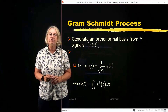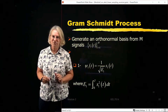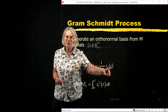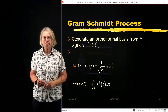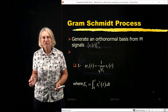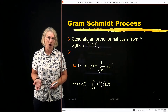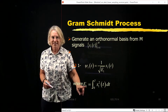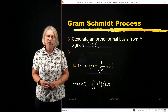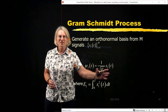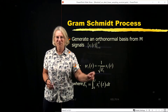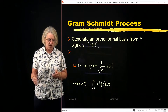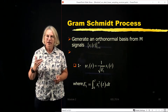Here's step one in our recipe: we first find the first basis vector. The first basis vector is easy — we just pick one of our symbols. Because I want it to be orthonormal, I've got to normalize the energy to one. So I calculate the energy of this first symbol, that's E1, and then I divide by the square root of E1. That forces this basis vector to have unit energy — by construction.